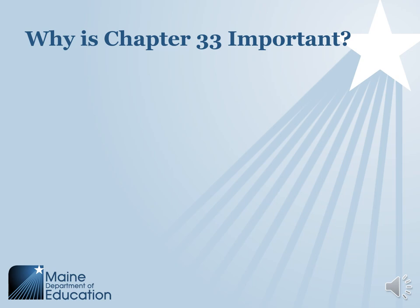Why is Chapter 33 important? The use of restraint and seclusion with children in schools carries inherent risks. When using restraint and seclusion we want to make sure we're doing it correctly, because there is the risk of physical harm, emotional harm, and the most serious consequences including death. Restraint and seclusion can also have lasting emotional harm, especially for students who have experienced trauma or violence. There is no evidence that restraint and seclusion has been a successful tool for behavior modification or is effective in reducing problem behaviors.